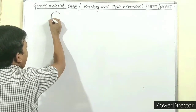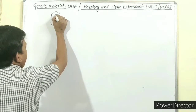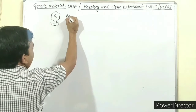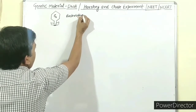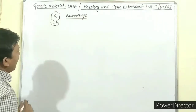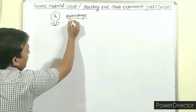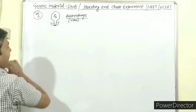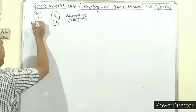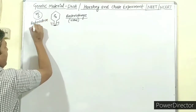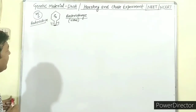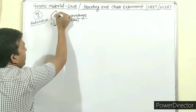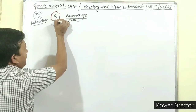Now take a look at the experiment — how can you tell that DNA is the genetic material? This is the bacteria and this is the bacteriophage. What we will do is: in a sulfur-35 medium, we will add S35, which is radioactive sulfur. We will use it to label the protein coat of the virus. Very clear, very easy.